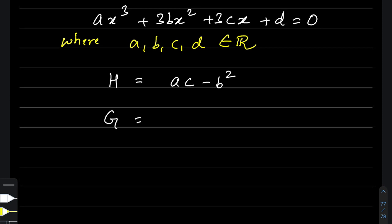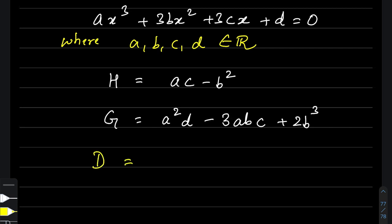There's another term g, which is slightly more complicated. It is given by a²d − 3abc + 2b³. The discriminant is then D = g² + 4h³. The reason I introduced g and h separately is that writing it all together would make a very huge term for anyone to remember.